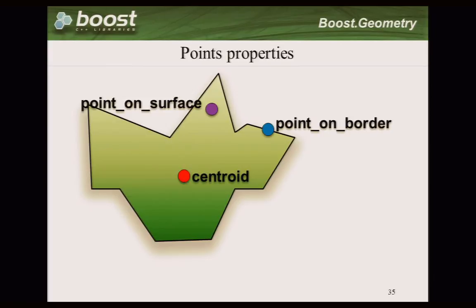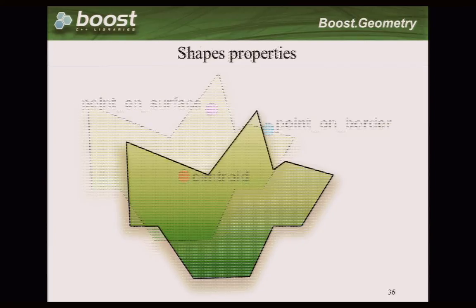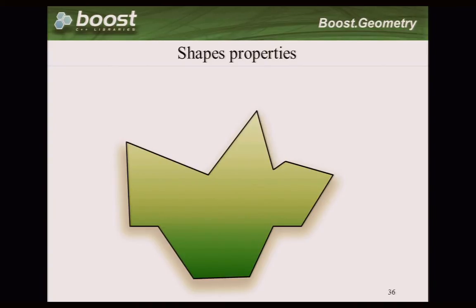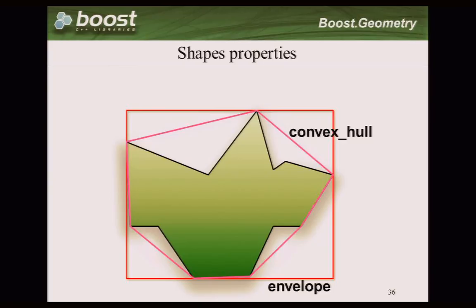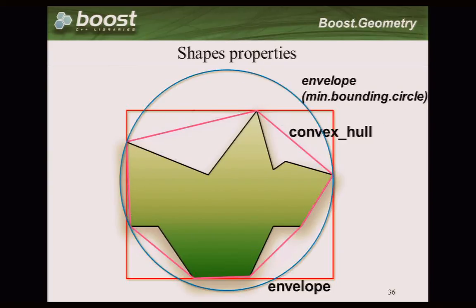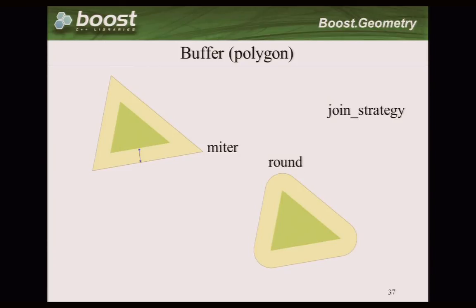We have algorithms and point properties - the centroid or generate any point on the border, which can be interesting, or generate any point on the surface inside the polygon. The centroid is not always inside the polygon as you probably know. Or generate the convex hull - a convex polygon exactly fitting around the polygon - or the envelope, or the minimum bounding circle. This is not yet implemented, therefore it's cursive.